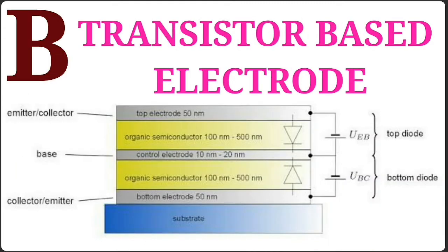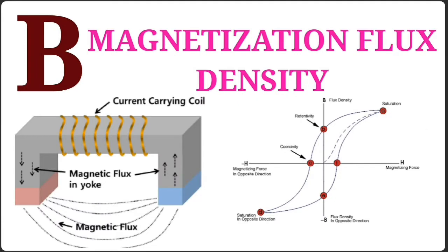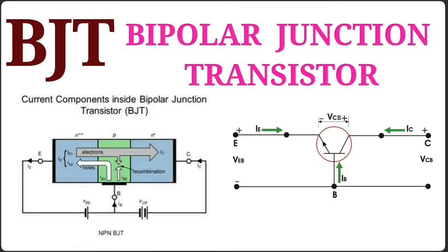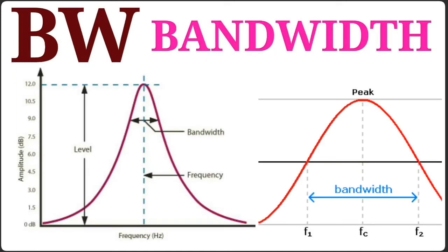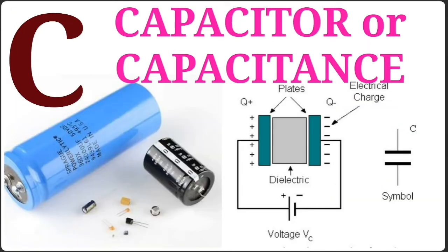B – Transistor Base Electrode. B – Magnetic Flux Density. BJT – Bipolar Junction Transistor. BV – Breakdown Voltage. BW – Bandwidth. C – Capacitance or Capacitor.